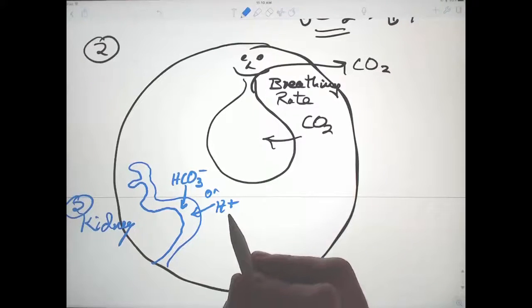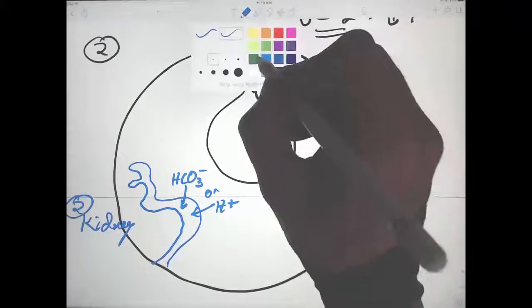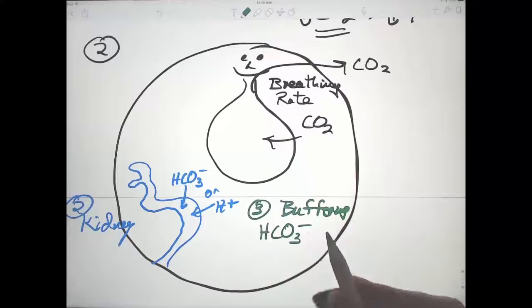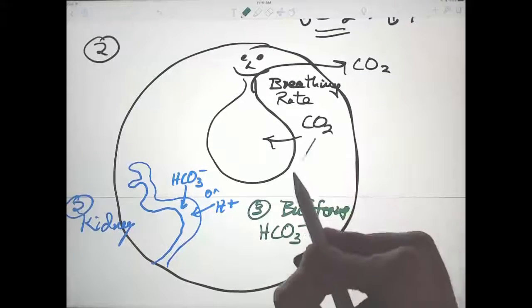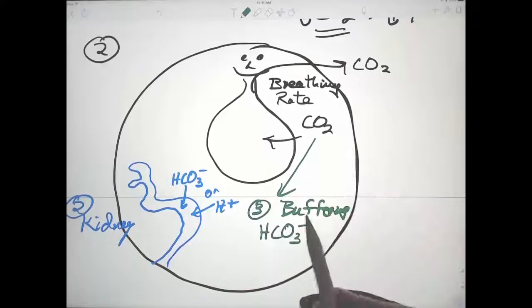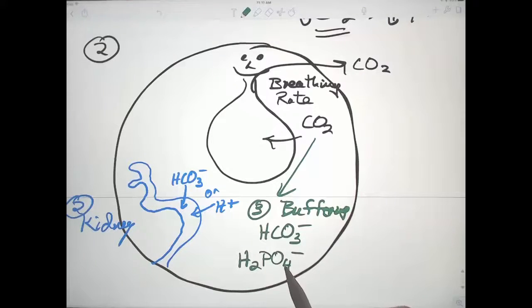The third major mechanism is by buffering. And you buffer with bicarbonate ion. That's related to the rate at which you get rid of carbon dioxide. Your breathing rate is affecting the amount of buffering with it. A second major buffering system is phosphate. So adjusting the different ions of phosphate also is a very important mechanism for buffering and for regulating pH.